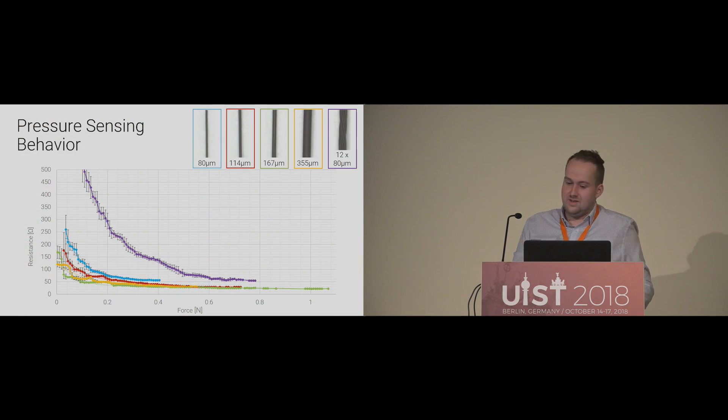As you can see here in this graph, all yarns have shown a pressure sensitive behavior. The best force to resistance ratio has been achieved with the twisted yarn, here displayed in purple. This technical evaluation has shown that all yarns are highly sensitive between 0 and 0.6 Newton.